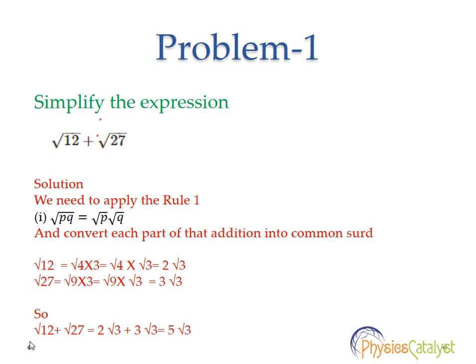We have to convert each part of that addition into common surds. Root 12 can be written as root 4 into root 3. That is equal to root 4 into root 3, which equals 2 root 3.